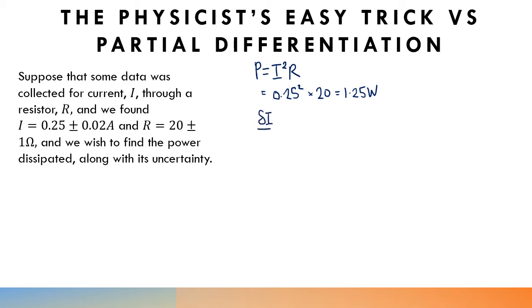So first of all the fractional error in I is going to be equal to delta I, which is the uncertainty in I, so that's 0.02 amps, divided by the value of the current, that may be the mean value of the current. And if you put that together you get 0.08. And similarly for the resistance, delta R over R, 1 over 20, so that's 0.05.